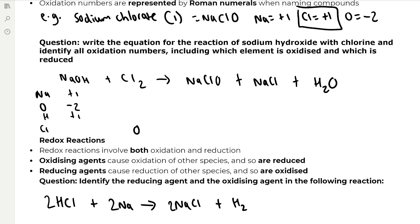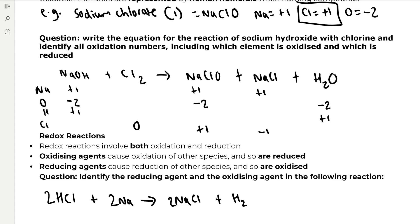In NaClO, oxygen is minus two and sodium is plus one, so chlorine must be plus one to give a total of zero. In NaCl, chlorine is more electronegative than sodium, so chlorine takes minus one and sodium takes plus one. In water, oxygen is minus two and hydrogen is plus one. Chlorine has gone from zero in Cl₂ to plus one in NaClO — that is oxidation because the oxidation number has increased. Chlorine has also gone from zero in Cl₂ to minus one in NaCl, which is reduction as the oxidation number has decreased.